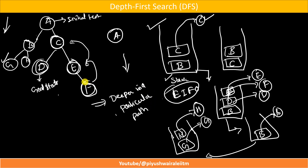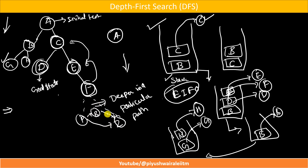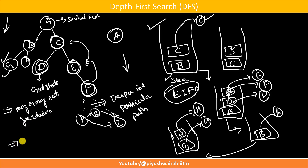There are a few things about Depth First Search. It may or may not give a required solution, because if there are infinite elements or an infinite search space, or if there is a loop in the path, there is a possibility it will get stuck in an infinite loop. In that case, we will not find our goal state. So it does not guarantee a solution, and does not guarantee an optimal solution.